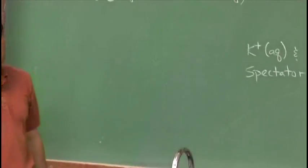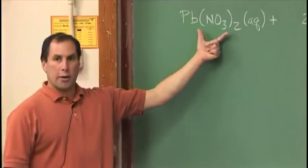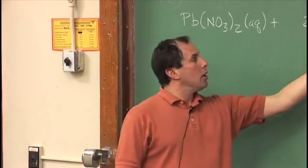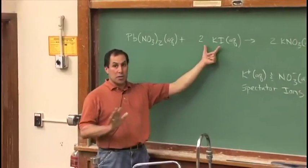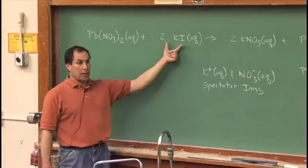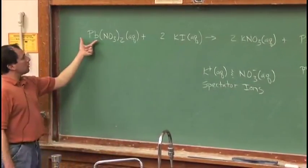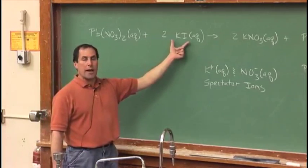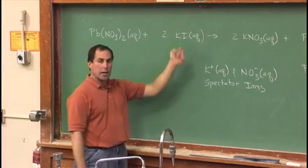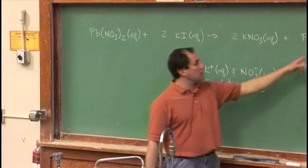Now what's going to happen is when these are mixed, the spectator ions nitrate and the potassium plus will do absolutely nothing—they'll continue to float around in the solution. But the lead 2 plus and the I minus will get together and make a precipitate, a solid, the yellow solid that goes down to the bottom of the beaker.